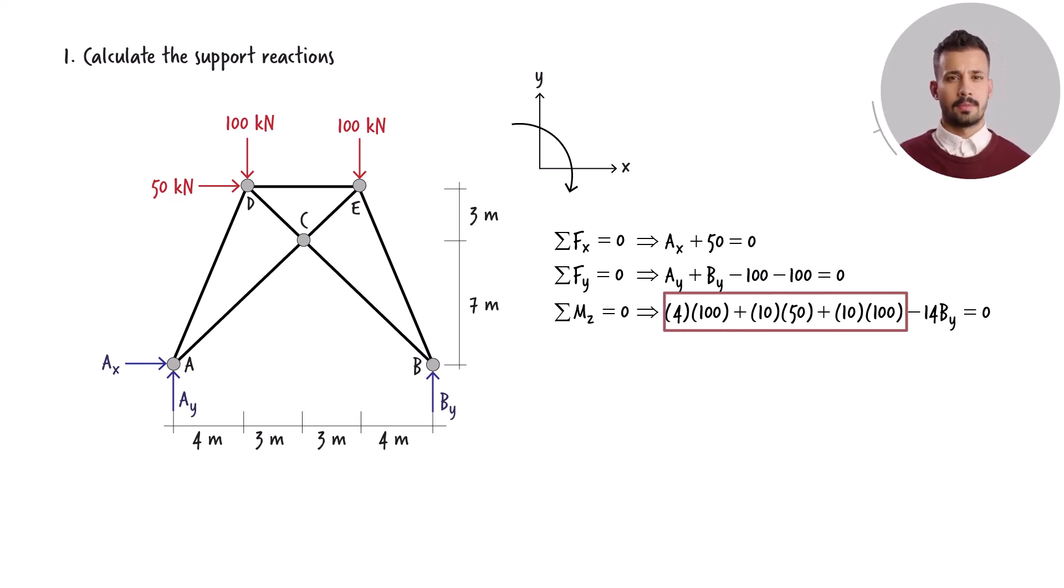These three terms are positive since the three applied loads produce a clockwise moment about point A. Conversely, the support reaction at point B, situated 14 meters to the right of point A, creates a counterclockwise moment. Therefore, we have a negative sign here.